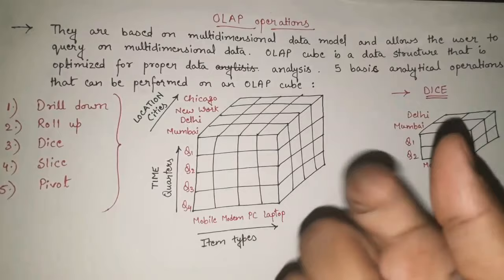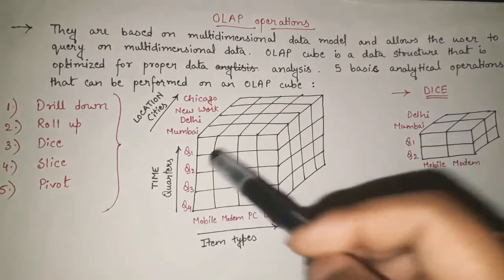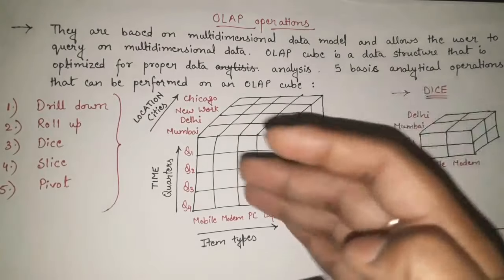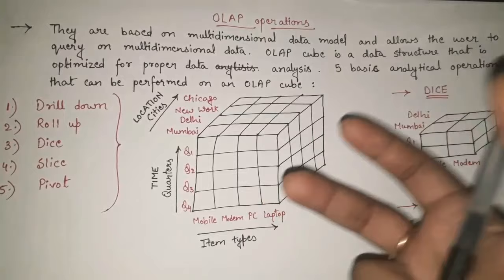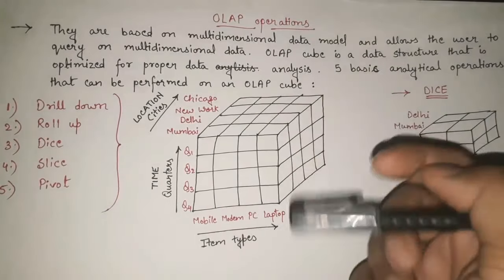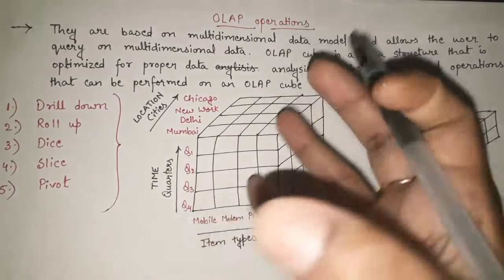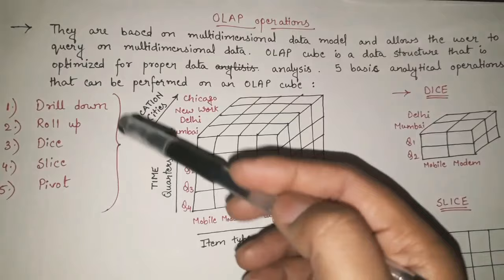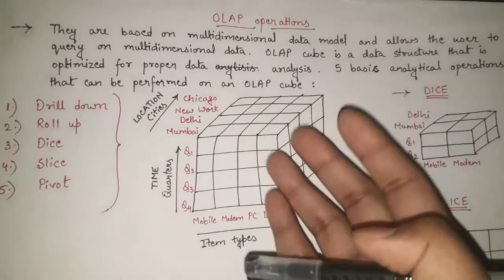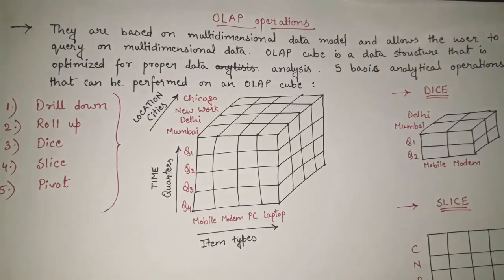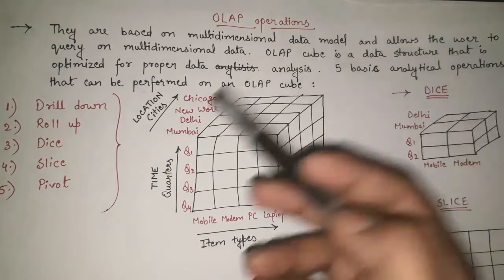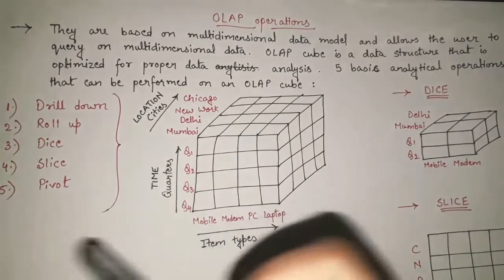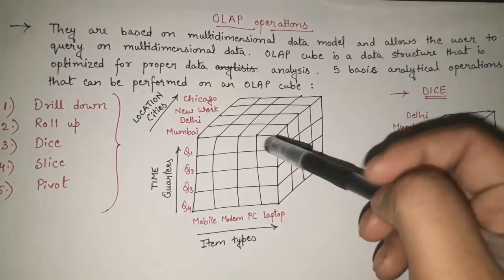Why are these OLAP operations needed? Whenever we have multi-dimensional data, for example here you can see we have one cube — this is known as an OLAP cube — with three-dimensional data: location, time, and items. Whenever we have multi-dimensional 2D, 3D, or 4D data and we want to fire any query on it, we perform OLAP operations on this data cube to extract the particular data we want. The five main OLAP operations are: drill down, roll up, dice, slice, and pivot.